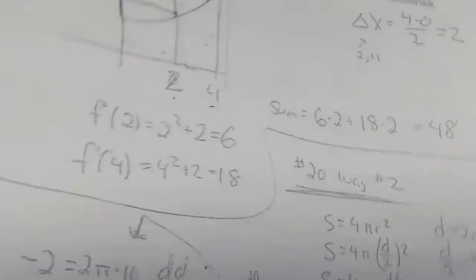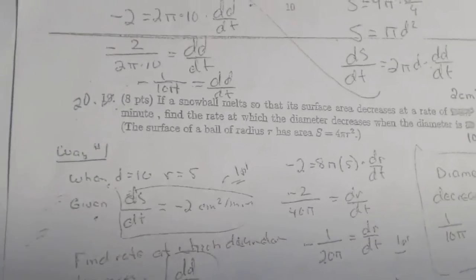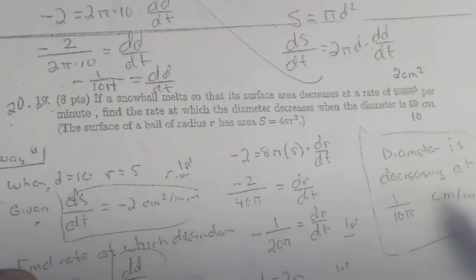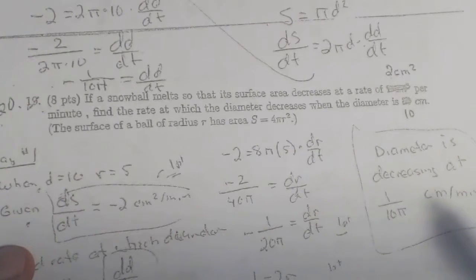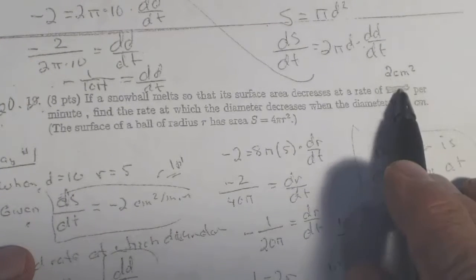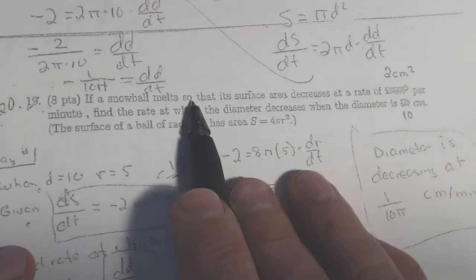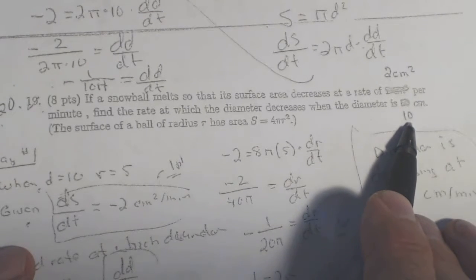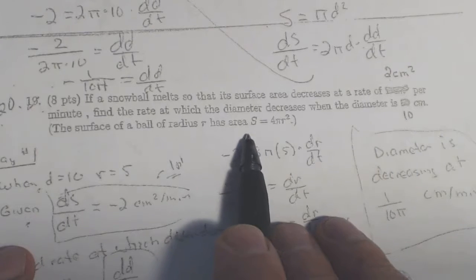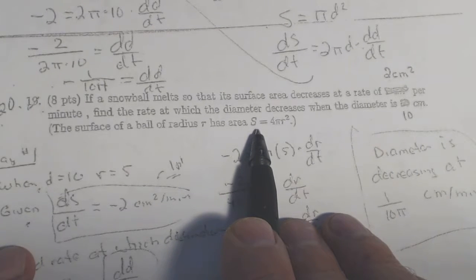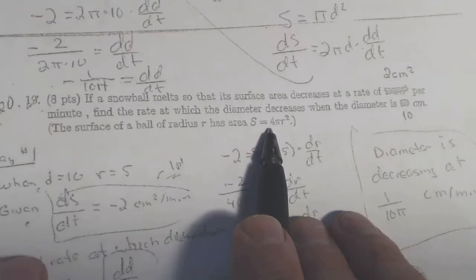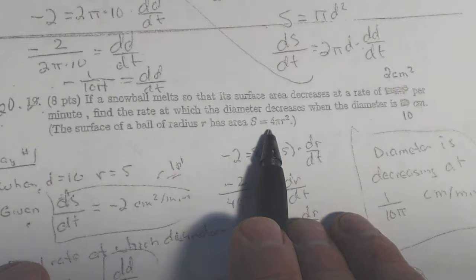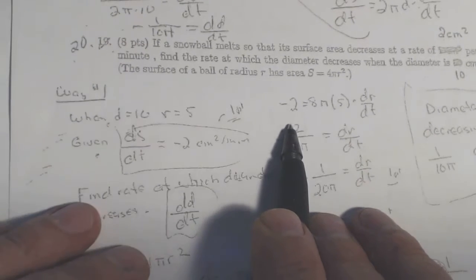Okay, finally, last problem. Only an hour worth of video here. Okay. A snowball melts, so the surface area decreases at a rate of 2 cubic centimeters per minute. Find the rate at which the diameter decreases when the diameter is 10 centimeters, and they give us the formula for the surface of this ball. In general, don't assume you're going to be given formulas, but in this case, it's not one of our basics, so they gave it to us. But know the ones on calculus in a nutshell's first page. All right.